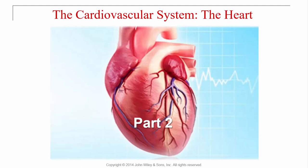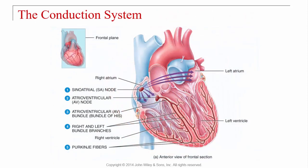Cardiovascular system: the heart, part two. In part one we went over the conduction system. To review: the impulse originates in the sinoatrial node, crosses over into the two atria, then goes to the AV or atrioventricular node, from there through the AV bundle or bundle of His, through the right and left bundle branches, and then eventually to the Purkinje fibers.